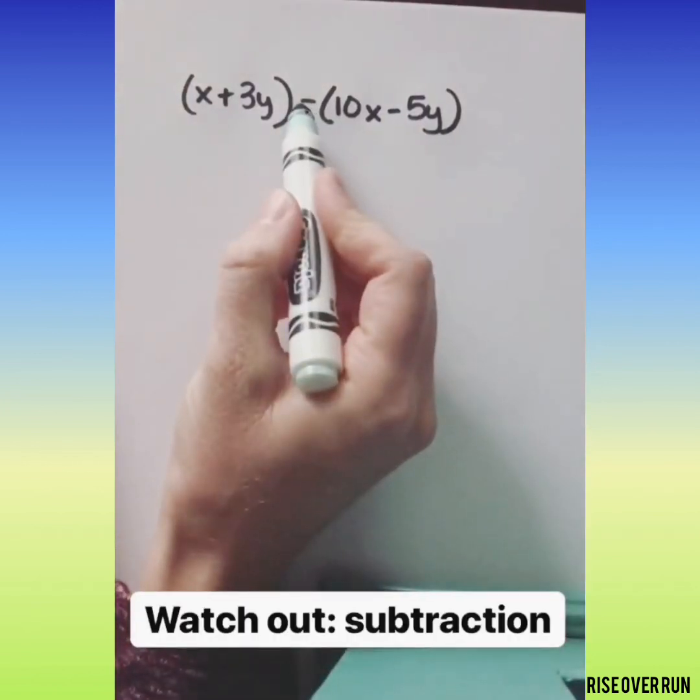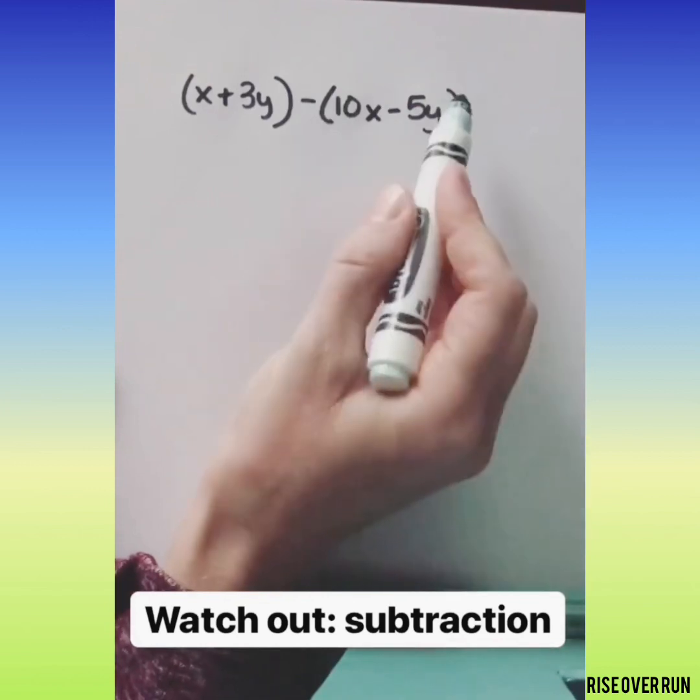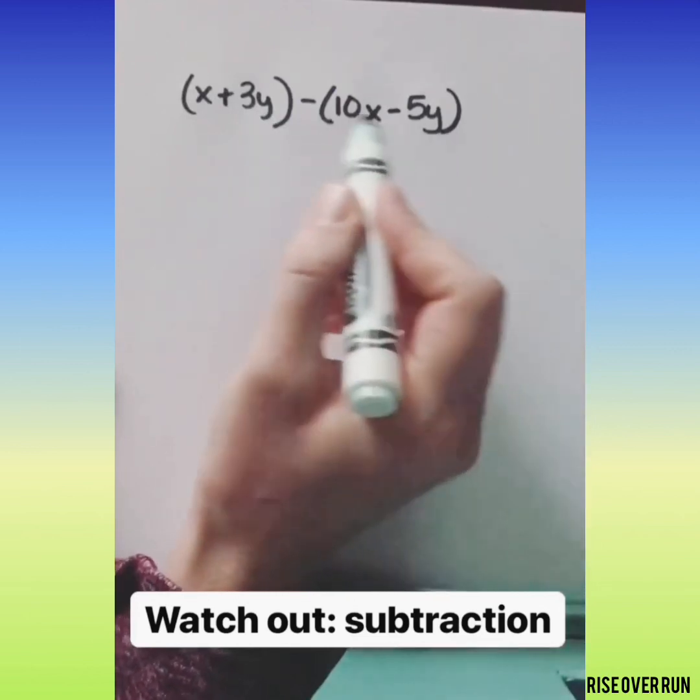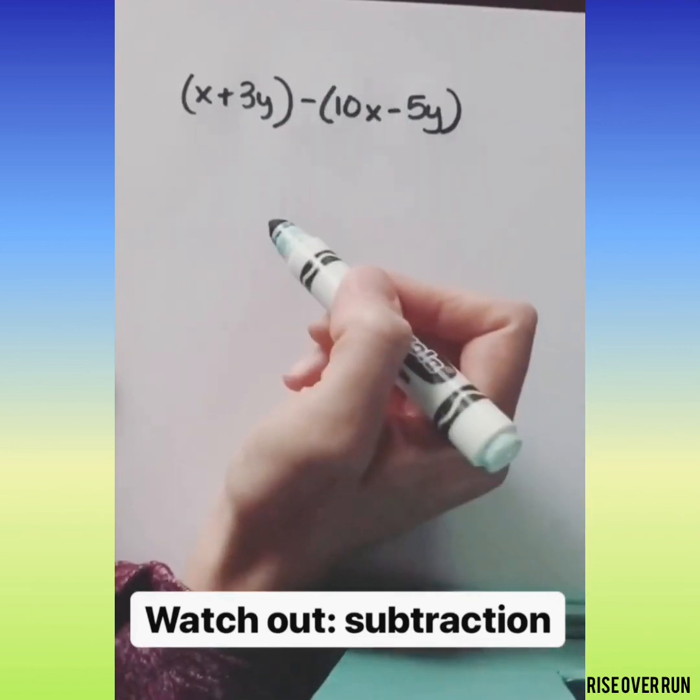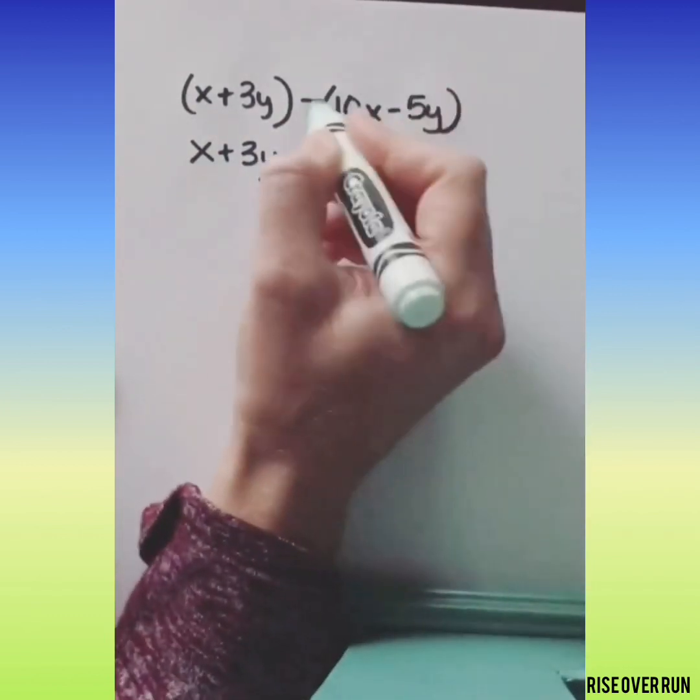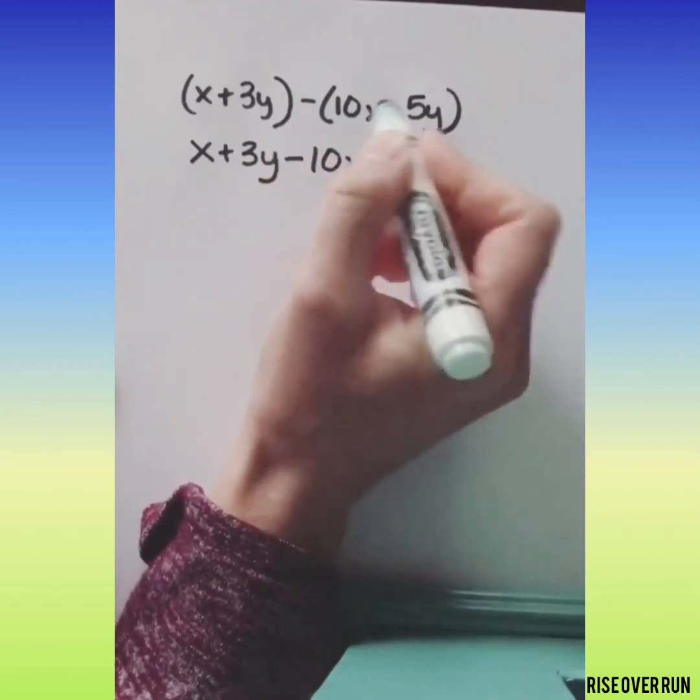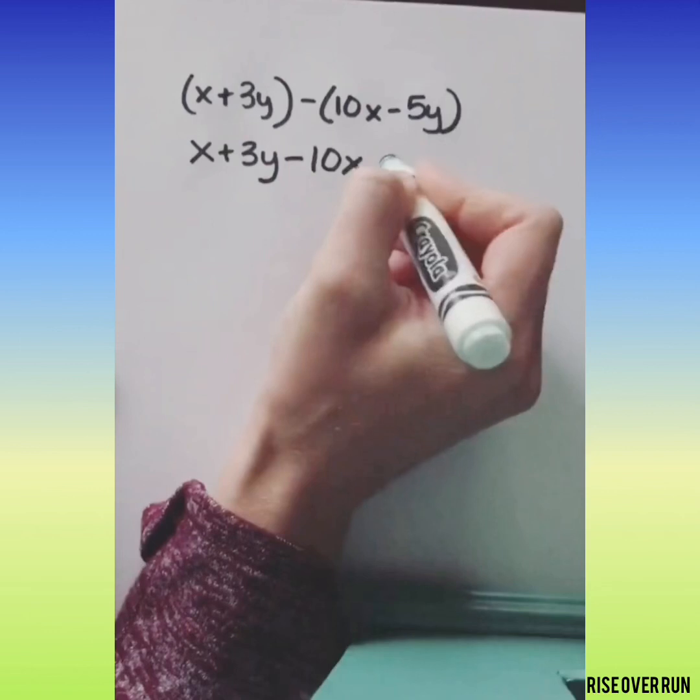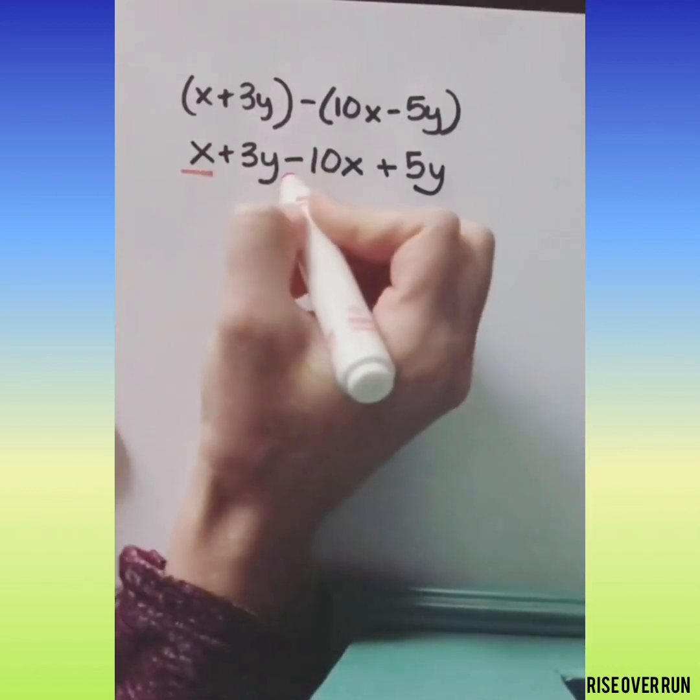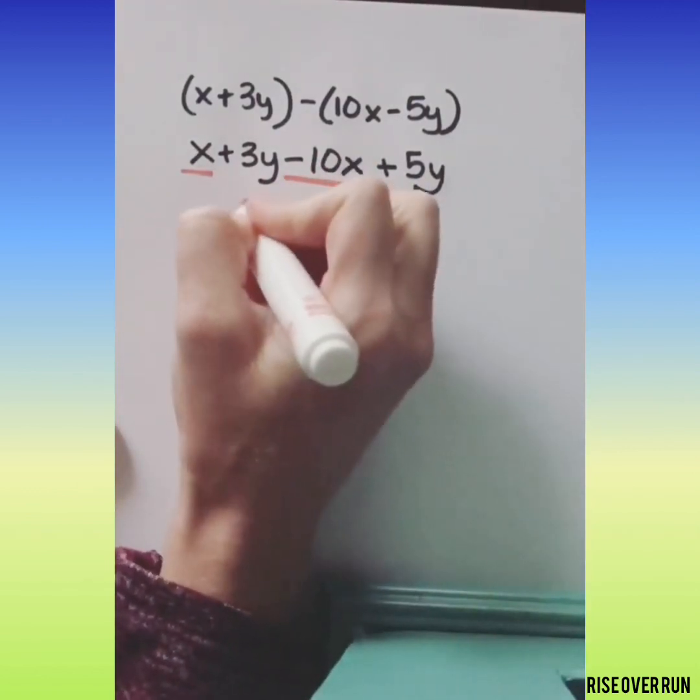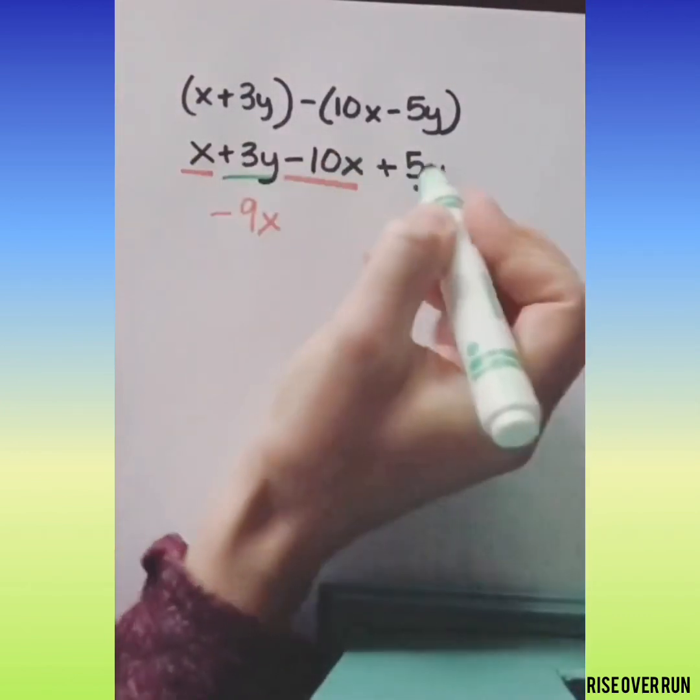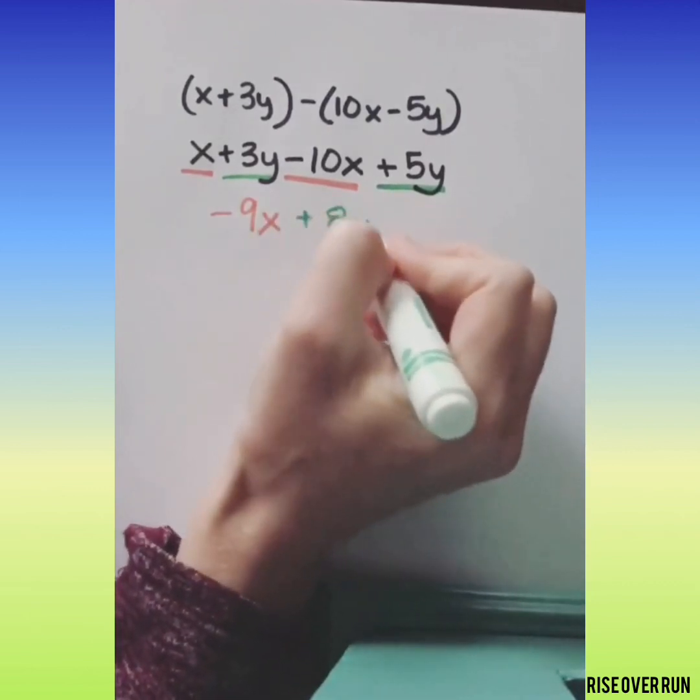Be careful with subtraction because that subtraction means you're taking away everything in this second parentheses. I recommend rewriting this without parentheses and distributing that subtraction sign. So we keep this first set of terms and now we want to subtract 10x and we want to subtract a negative 5y, so we'll end up adding 5y. Now let's find our like terms. x minus 10x is negative 9x and then 3y and 5y make 8y.